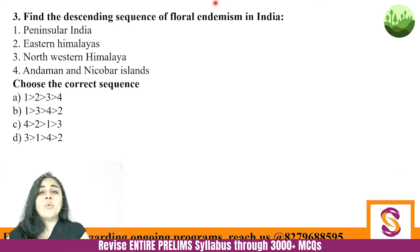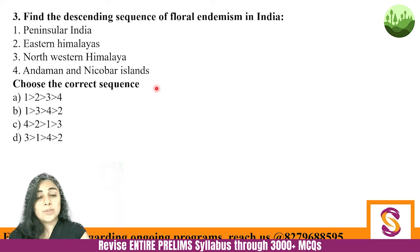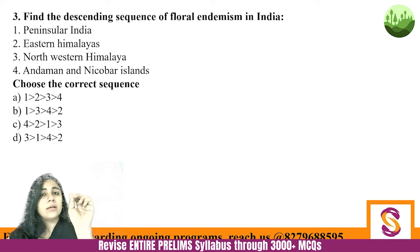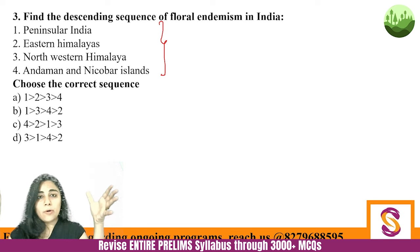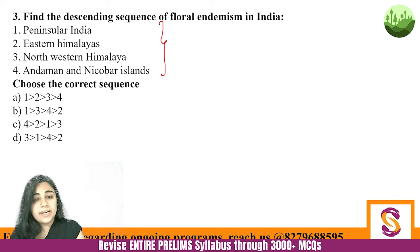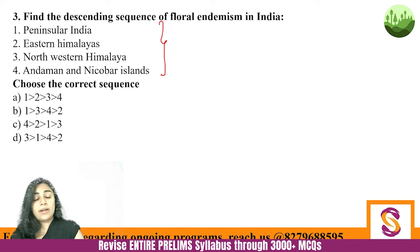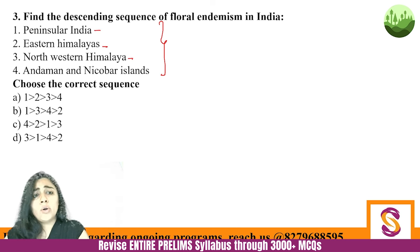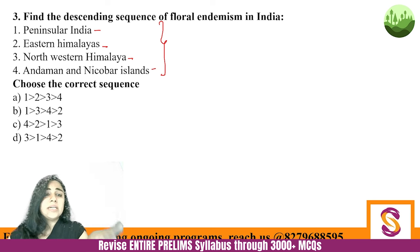Question three: Find the descending sequence of floral endemism in India — Peninsular India, Eastern Himalayas, Northwestern Himalayas, and Andaman and Nicobar Islands. Before jumping to conclusions, consider one simple aspect: out of these four categories, which is geographically the biggest? Endemism means a particular plant is found only in that region — it's one of the conditions for classifying an area as a biodiversity hotspot. Andaman and Nicobar is the smallest category here, so despite richness in distribution, it won't rank highest in number.